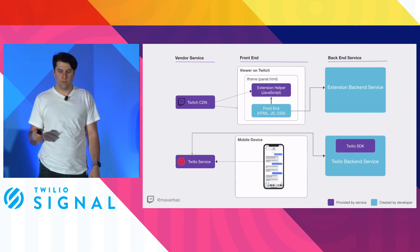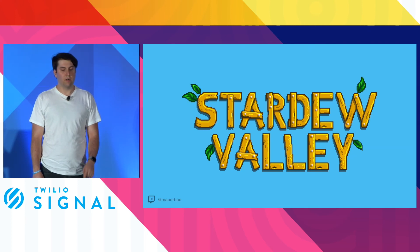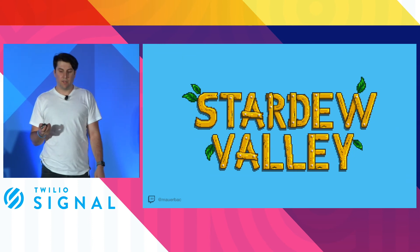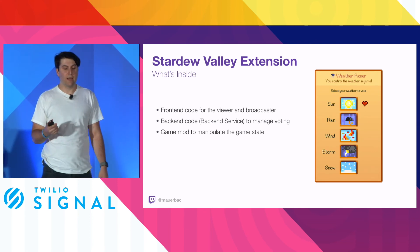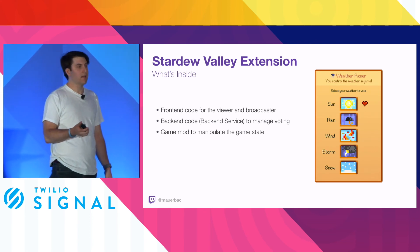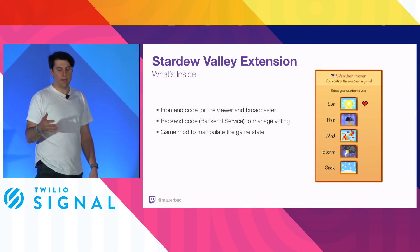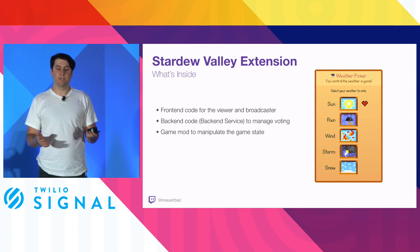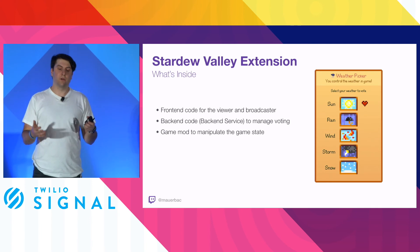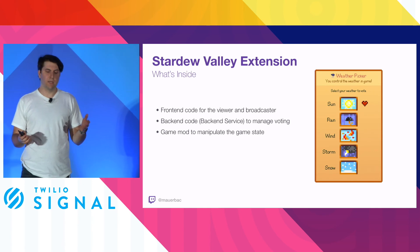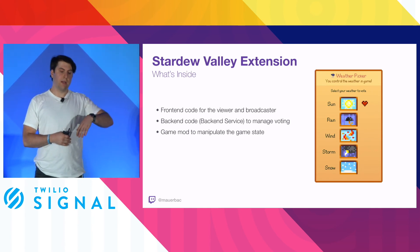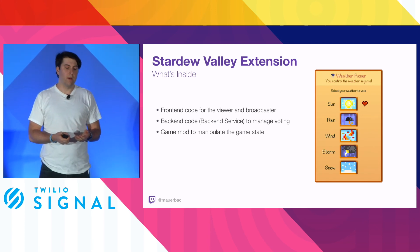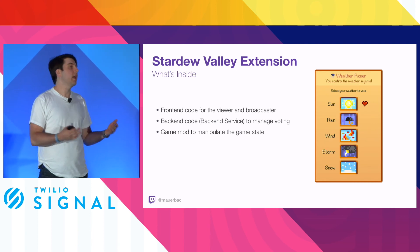Here's an extension using the popular game Stardew Valley—a simulation game where you run your own farm. I built an extension that allows viewers to interact with the broadcaster by voting on weather conditions. In the game there are about five weather conditions: sun, rain, wind, storm, and snow, which make it more difficult or easier to grow crops. It was really easy to build—just a simple front end for the viewer and broadcaster with native assets, a back end that tallied up votes, and a game mod that sat between the back end and the game to force the new weather.